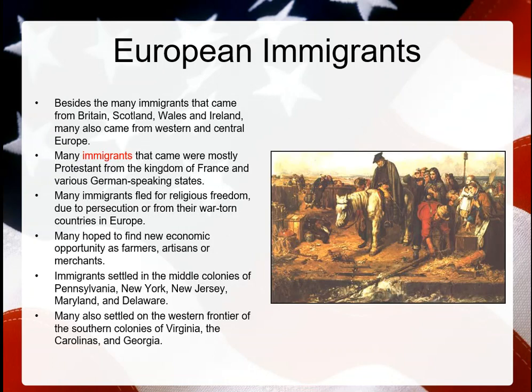Besides the many immigrants that came from Britain, Scotland, Wales, and Ireland, many also came from Western and Central Europe. Most immigrants were Protestant, from the Kingdom of France and various German-speaking states. Many fled for religious freedom due to persecution or from war-torn countries in Europe. Religion is still a very big issue in Europe at this time — they're still unsettled from the Protestant Reformation, which tore Europe apart with many wars, including the Thirty Years' War. People just want to look for a better life, one that's more opportunistic and less political.